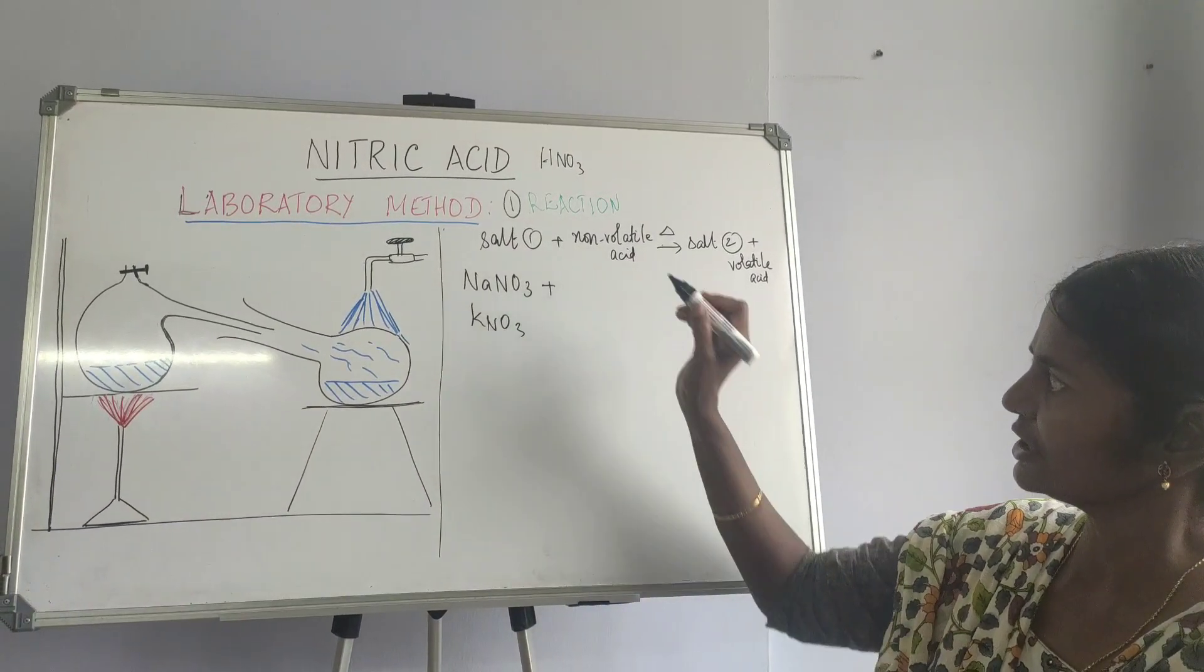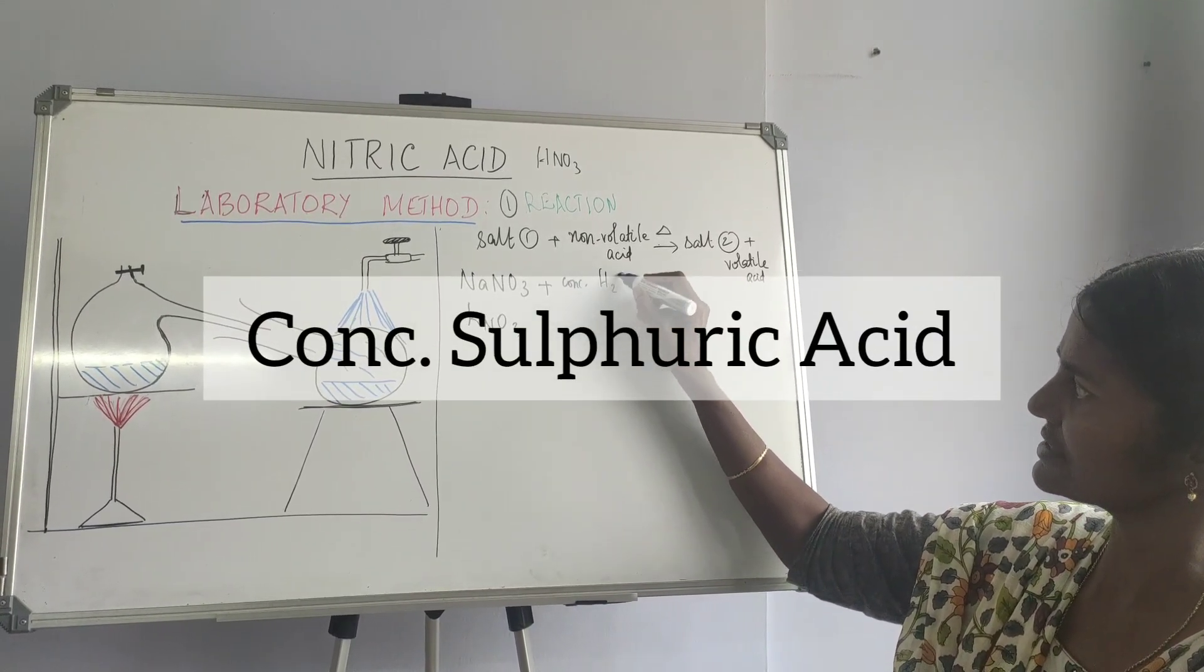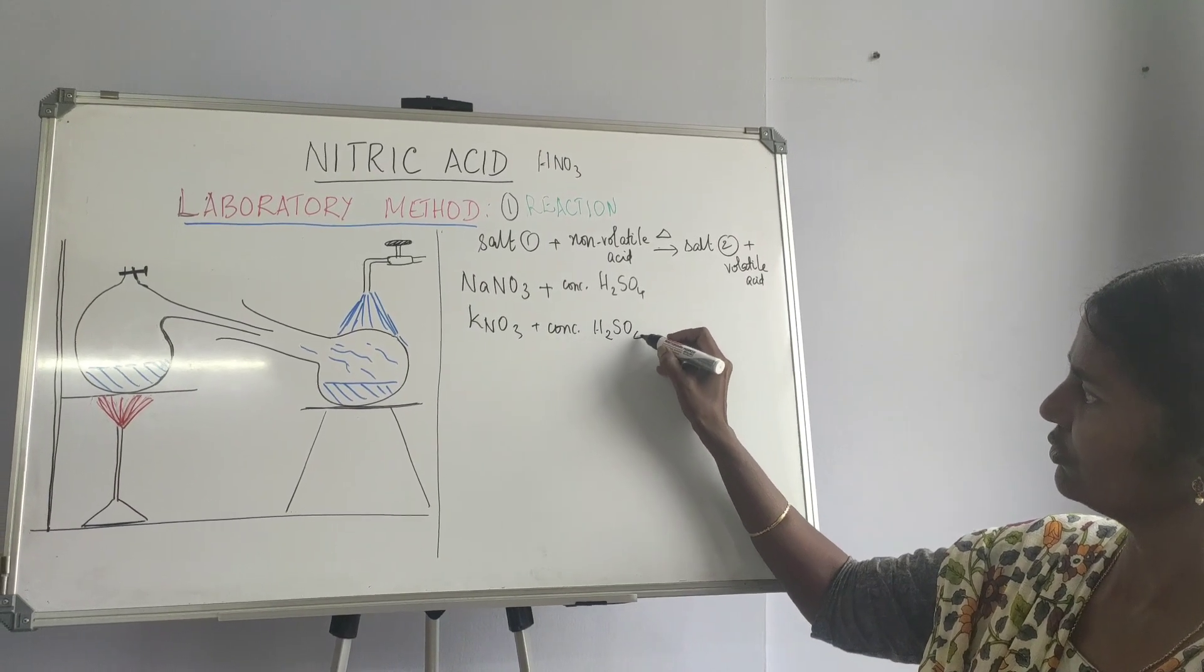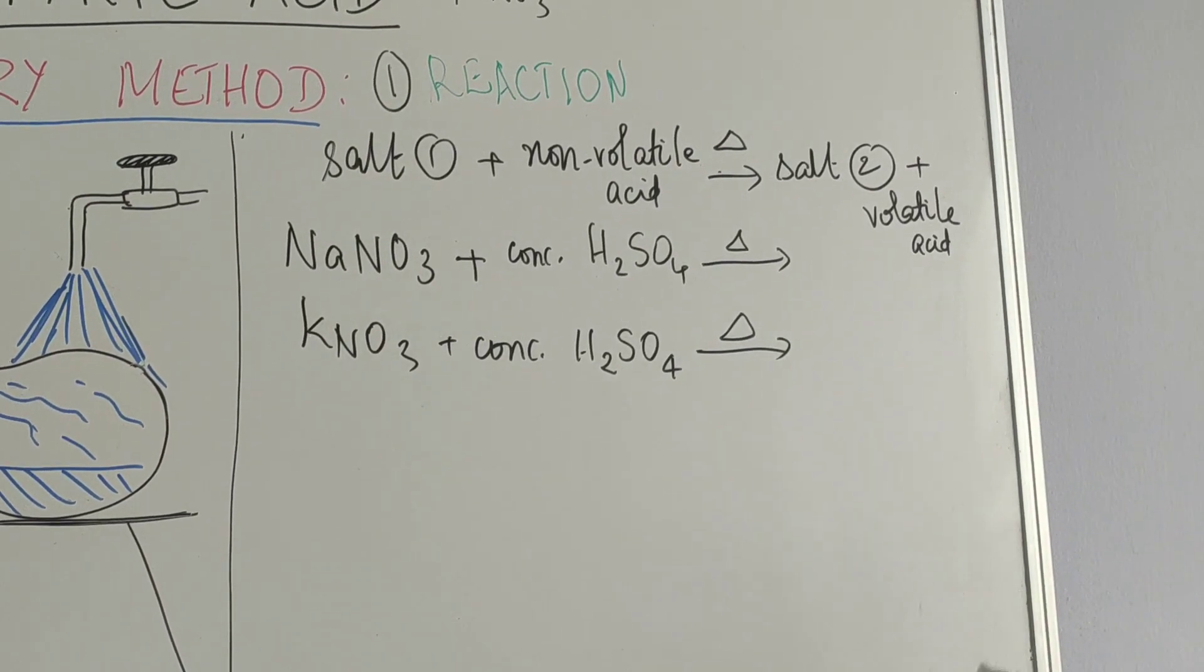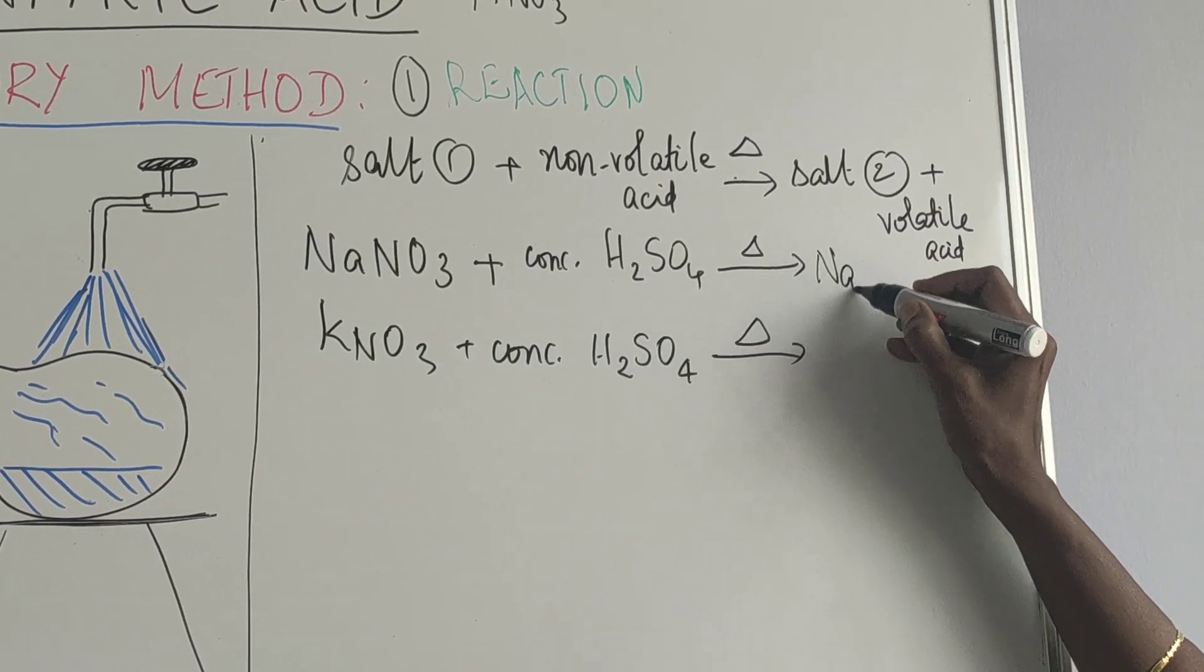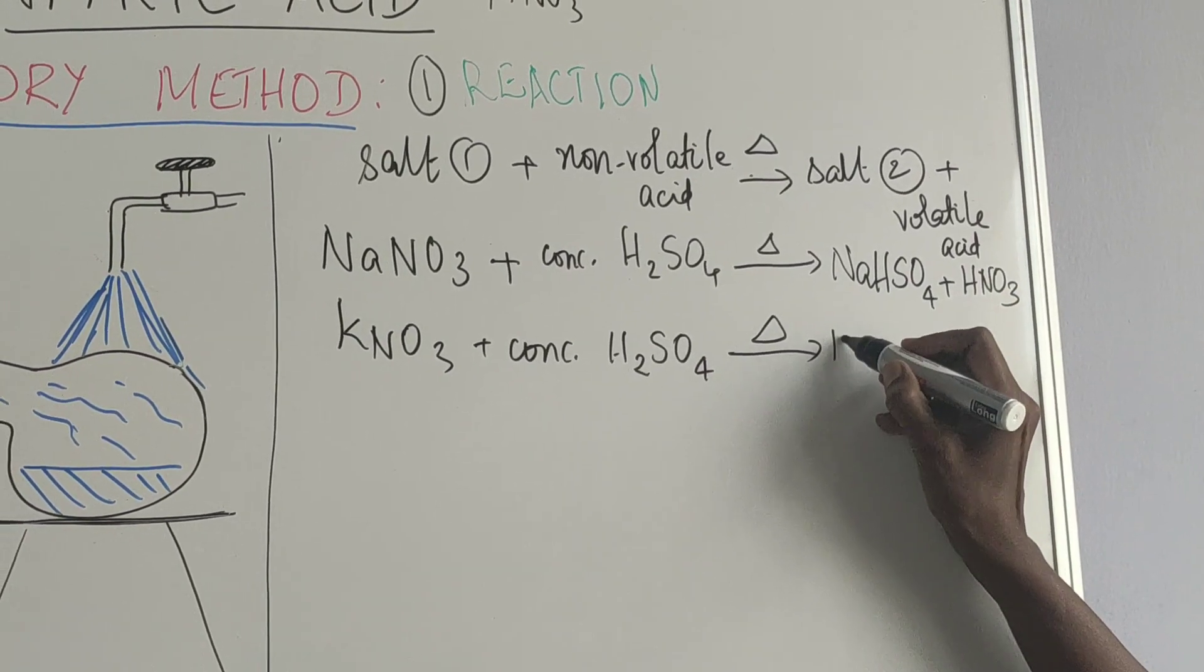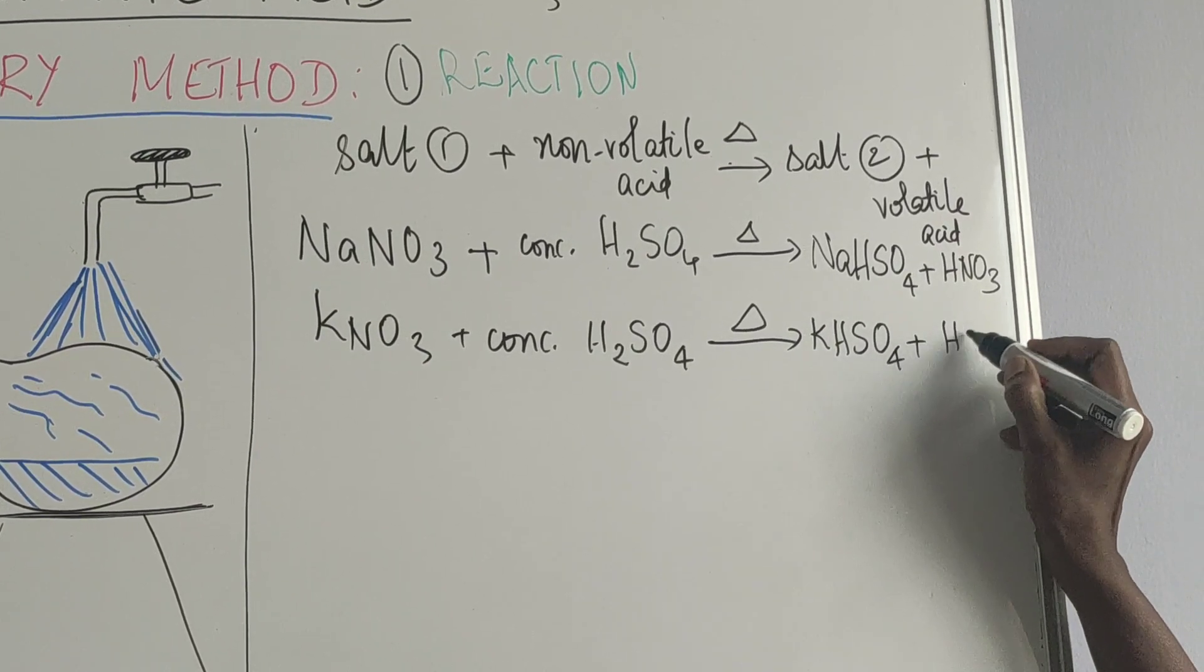These are the two salts that we can use. And the non-volatile or less volatile acid is concentrated sulphuric acid. So this is the acid that we use. Now these two are heated to give you a salt that would be sodium bisulphate plus HNO3. Here it would be potassium